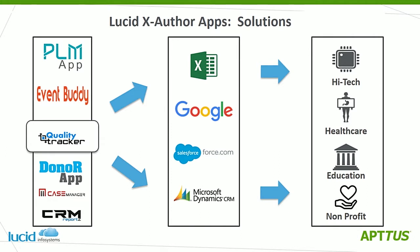Lucid's XAuthor apps can be used in a number of different industries. The PLM app, for example, can be used for healthcare and high-tech industries. Quality Tracker is very useful for high-tech and especially healthcare where regulatory compliance is very high. EventBuddy is essential for the higher education and nonprofit market, and DonorApp is the lifeblood for nonprofits. Case management is required for biotech, high-tech, and financial services, and CRM reports can be used across any industry.